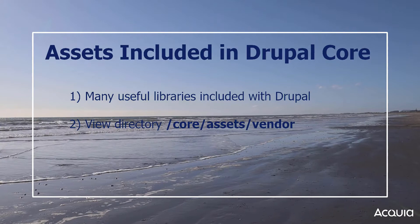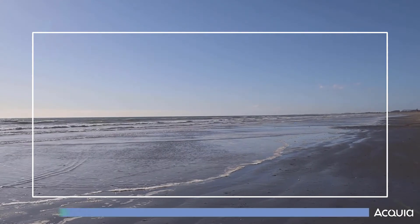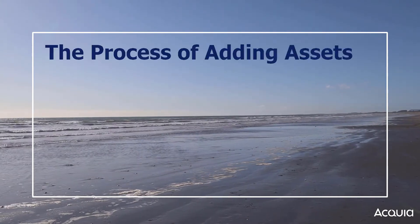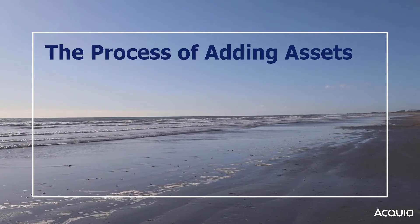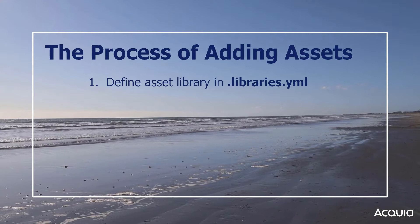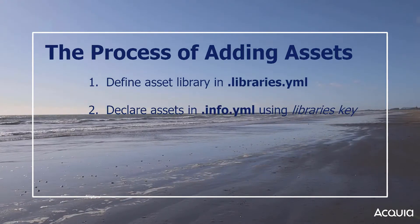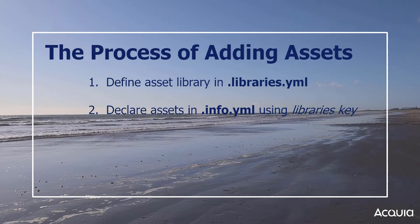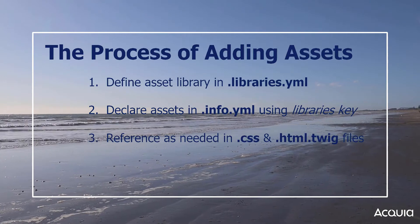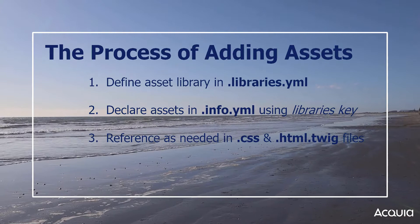In addition to what comes with Drupal, you can declare whatever libraries and dependencies you need for your theme. The process of adding assets to your theme is a three-part process. First, define the asset library and any specific containers in your libraries.yaml file. Then, declare the assets with the libraries key in your info.yaml file. And finally, reference those assets as needed in the appropriate CSS or HTML.twig files, which we'll learn later.